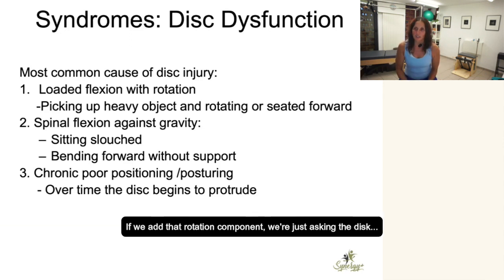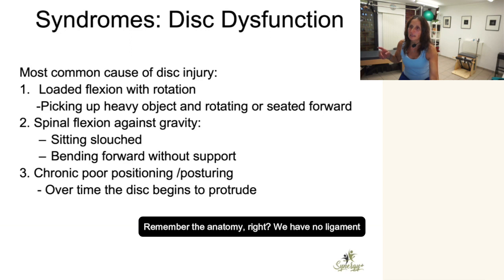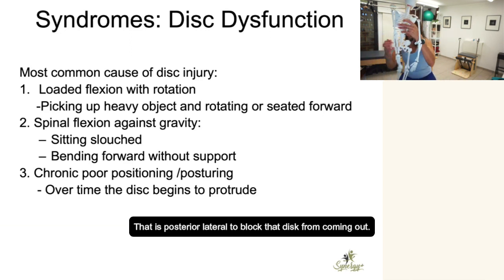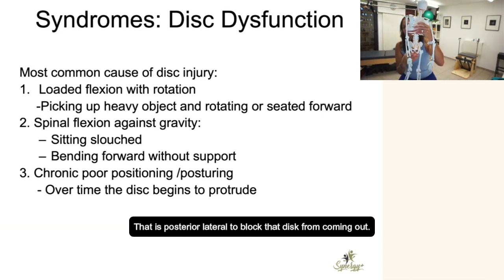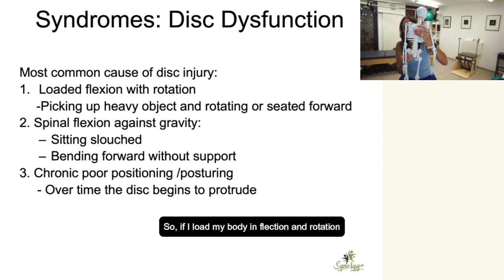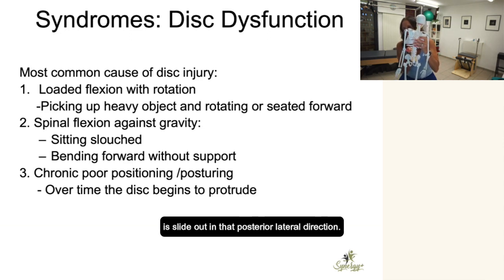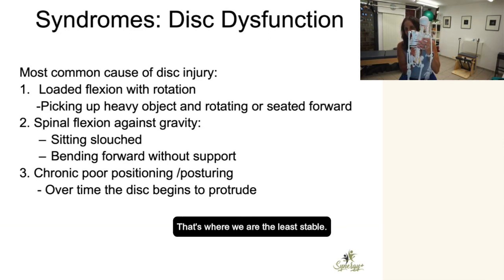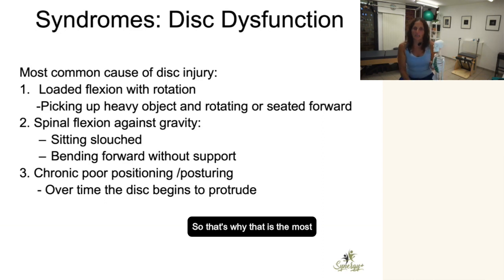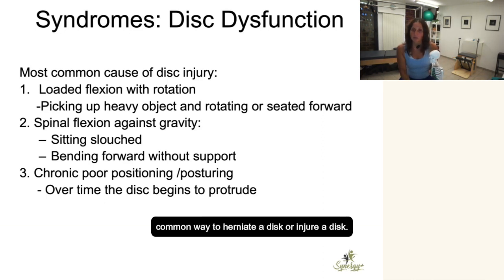If we add that rotation component, we're just asking the disc — remembering the anatomy — we have no ligament that is posterior lateral to block that disc from coming out. So if I load my body in flexion and rotation, the most likely thing for the disc to do is slide out in that posterior lateral direction. That's where we're least stable, and that's why it is the most common way to herniate or injure a disc.